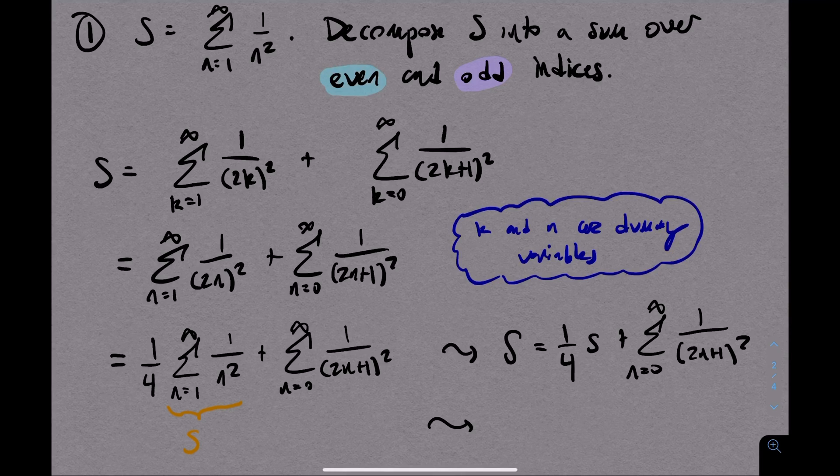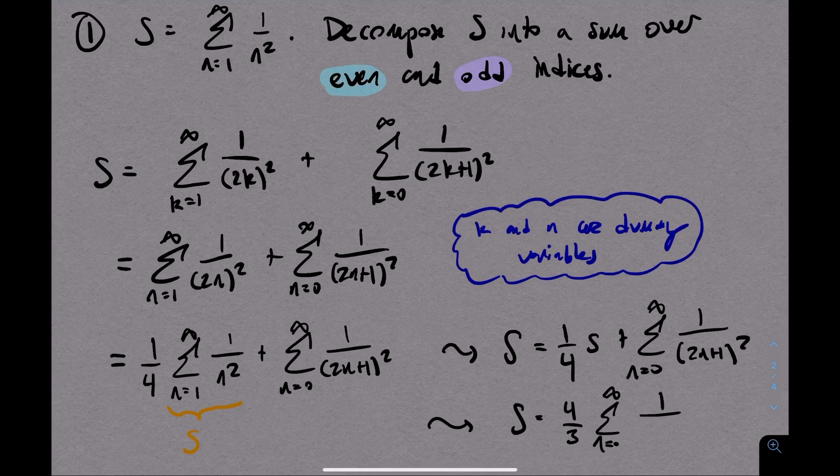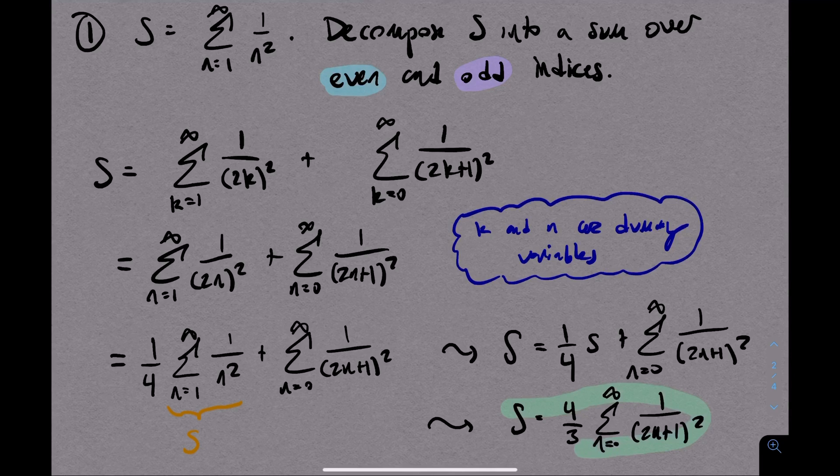s equals 1 fourth times s plus this new second sum over odd indices that we generated. We can solve for s by subtracting 1 fourth s from both sides to get 3 fourths s equals the new sum multiplied by 4 thirds. And there we go. Our original sum s that we care about is 4 thirds times the sum from 0 to infinity of 1 over 2n plus 1 quantity squared.